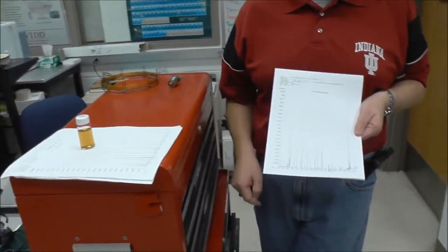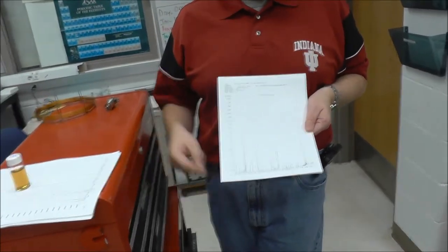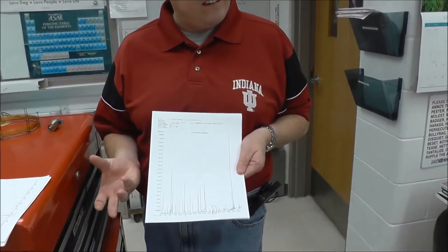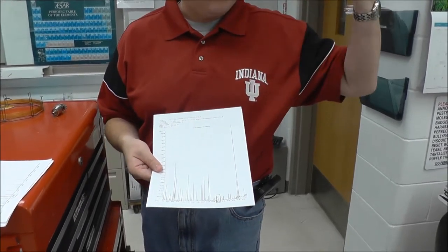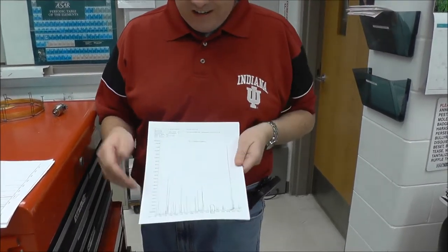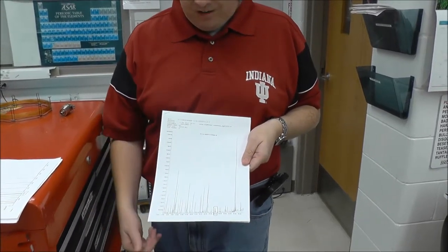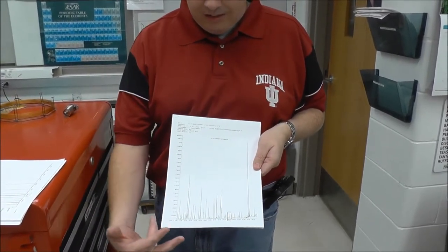So literally you take 25 fruit flies, you hit frappe, you spin out all the hard chitin, you extract out all the small organics, the sugars, the proteins, the lipids, all that good stuff. We make them volatile by putting methyl groups on them, and then we separate them out.